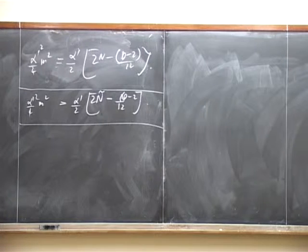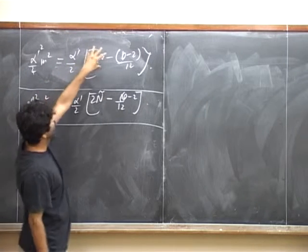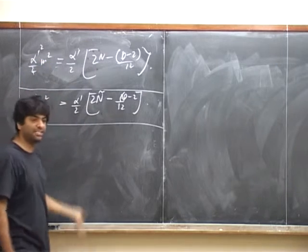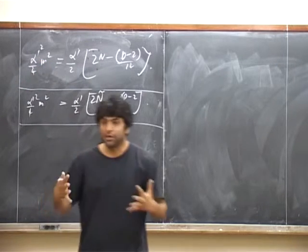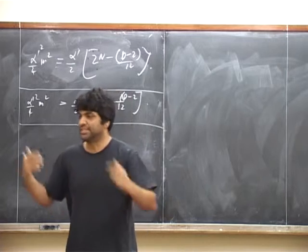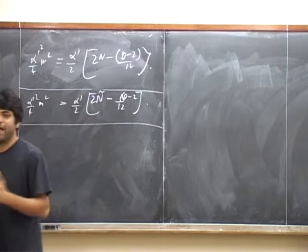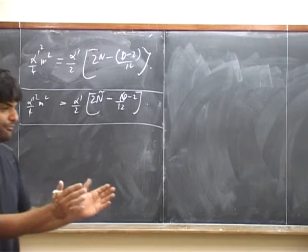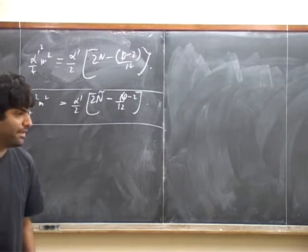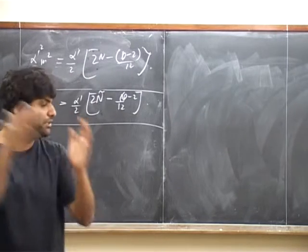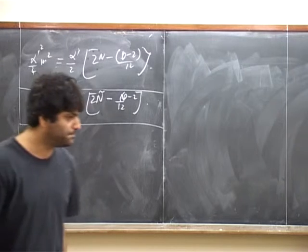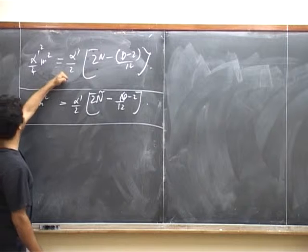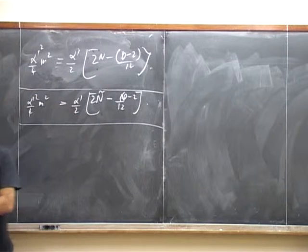To remind you where these terms come from: the constraint is simply that the Hamiltonian on the worldsheet of the string is equal to zero. The total Hamiltonian is the sum of the left-moving and right-moving Hamiltonians. Independently, both the left-moving and right-moving Hamiltonians must be zero. These are the two conditions.